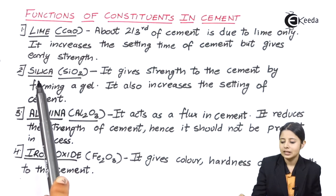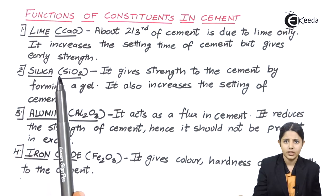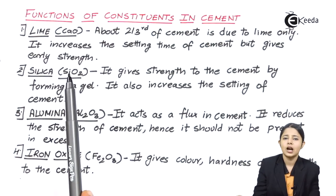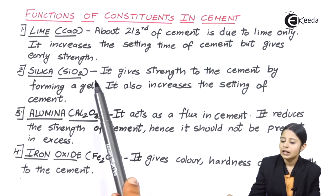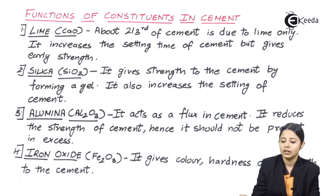The second one is silica. Silica SiO2, again silica is one of the major components of cement and it also gives good strength to the cement. It gives strength to the cement by forming a gel. It also increases the setting of the cement.